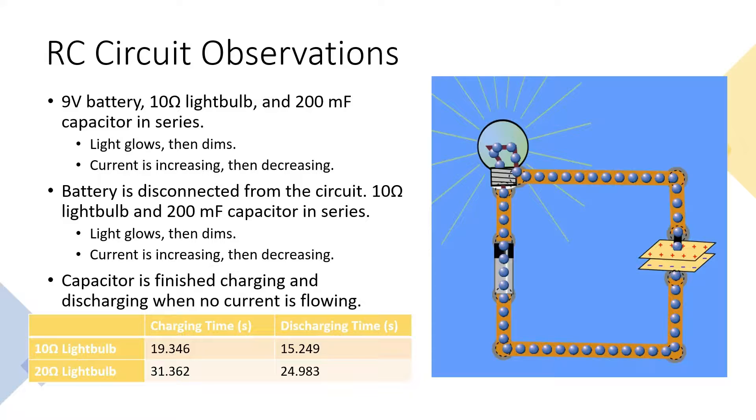When the battery is disconnected and the capacitor is directly connected to the light bulb, the light again glows brightly before dimming. When the battery was removed, the capacitor began discharging, and the current in the circuit increased until the capacitor was fully discharged and the current decreased to zero during this process.